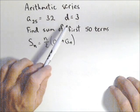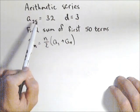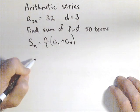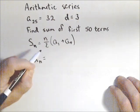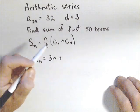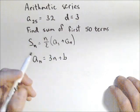We already know the common difference is three, and that when n is 25, the value must be 32. So if we're trying to find the formula for the nth term, we know it's gonna be 3n plus some value, let's call it b.